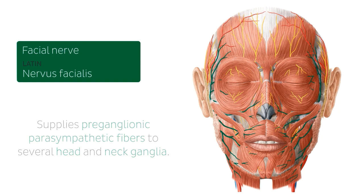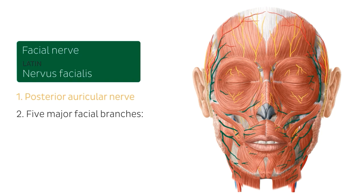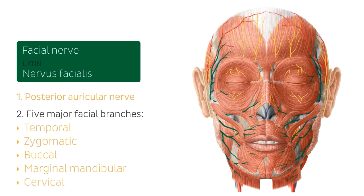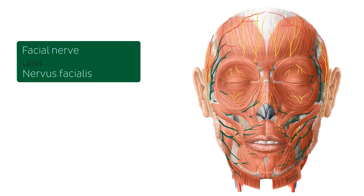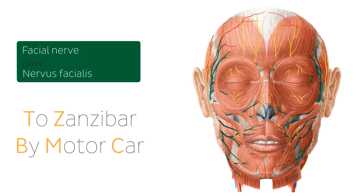The facial nerve also supplies pre-ganglionic parasympathetic fibers to several head and neck ganglia. Different nerves branch off of the facial nerve: one is the posterior auricular nerve, and then there are five major facial branches — the temporal, the zygomatic, the buccal, the marginal mandibular, and the cervical. To memorize these, I suggest the mnemonic 'Two Zanzibar By Motor Car': T for temporal, Z for zygomatic, B for buccal, M for marginal mandibular, and C for cervical.